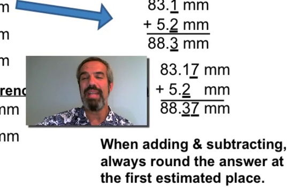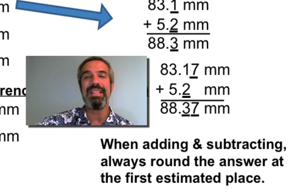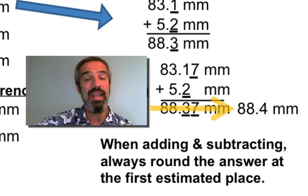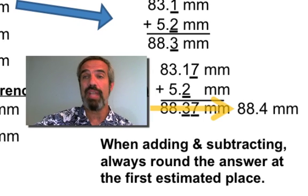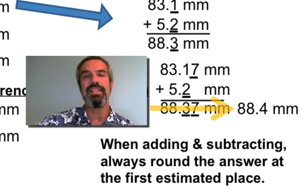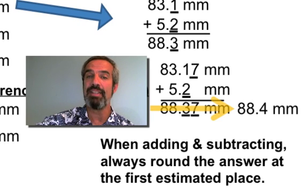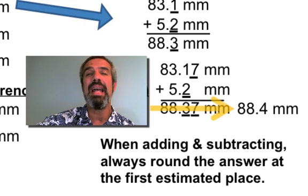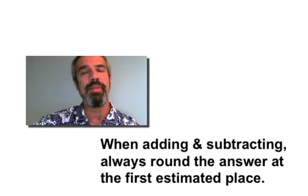So here's the rule. When adding and subtracting, always round the answer off at the first estimated place. In this case, it would be the tenths place, where the 3 is. 88.37, I'm not allowed to have 2 guesses. So I have to stop at that first estimated place, or that first guessed place. So it would be 88.4 millimeters. Now, if you were counting significant figures on that one, you'd say, I've got 4 sig figs in the top number, 2 in the bottom. I want to have 2 in my answer. It doesn't apply. These are not multiplication and division problems. They're adding and subtracting problems, and they follow a different set of rules. So again, the rule is when adding and subtracting, always round the answer off at the first estimated place.